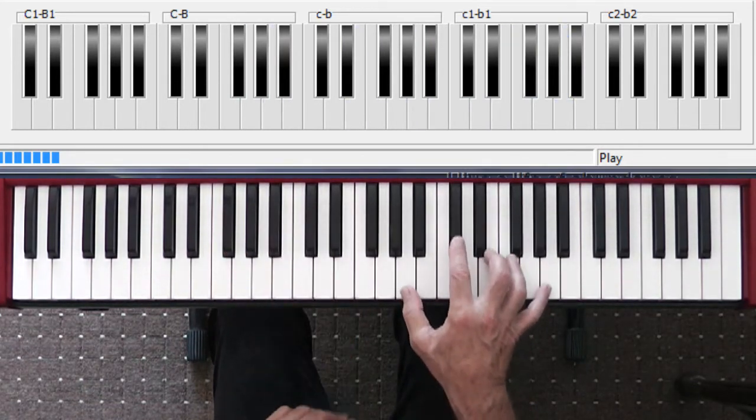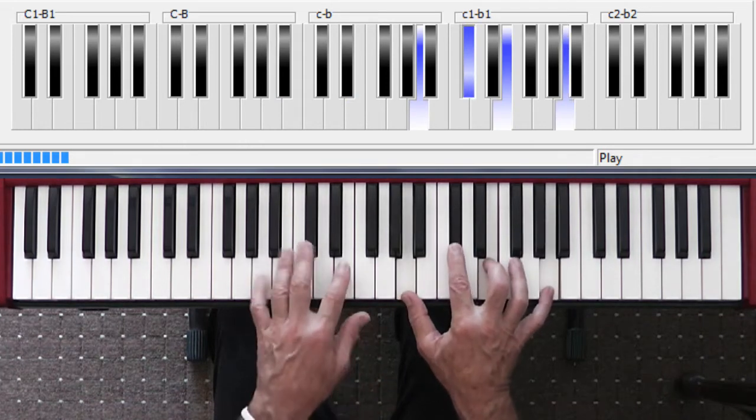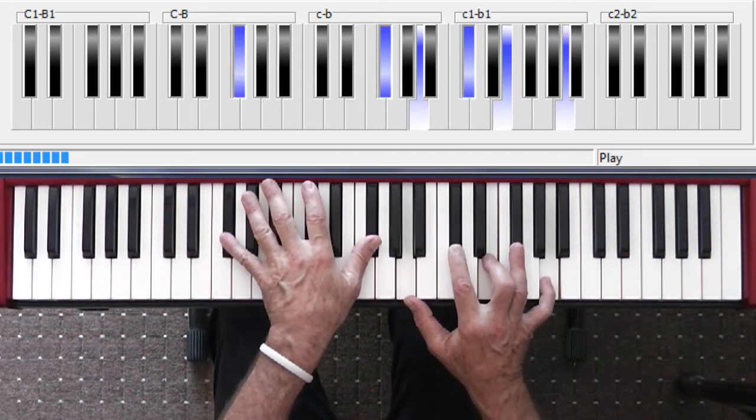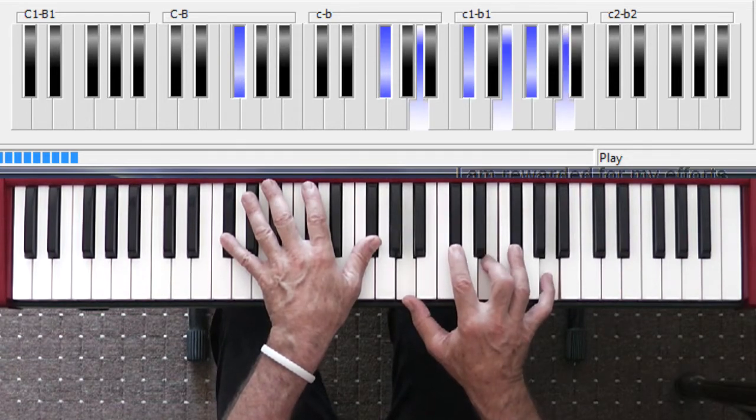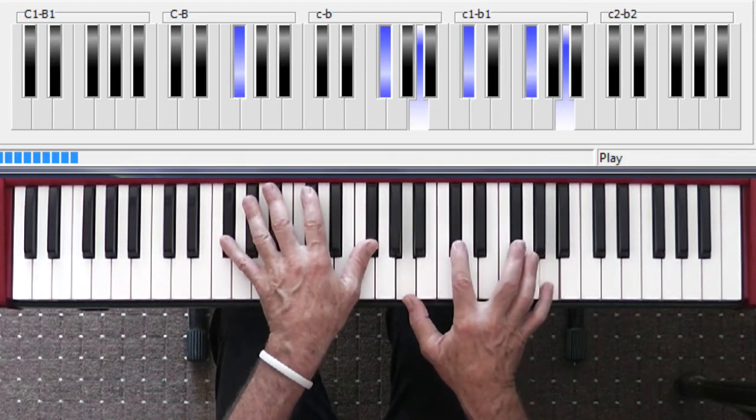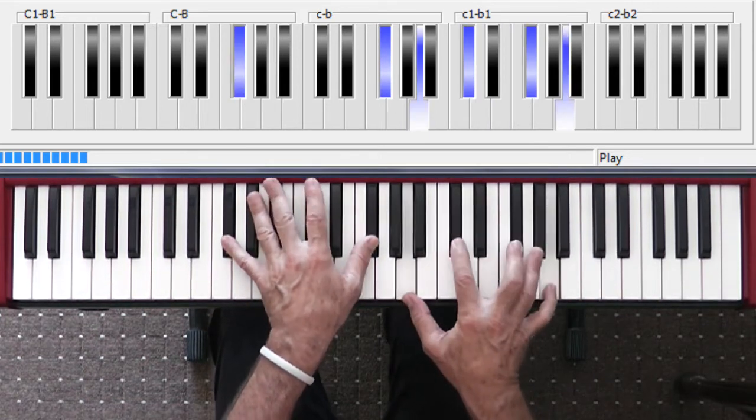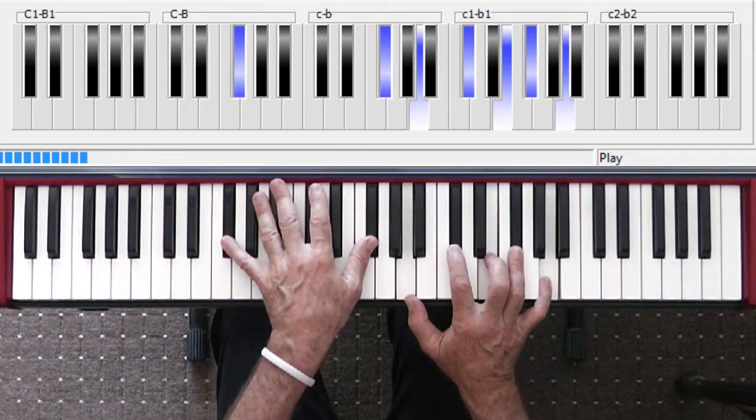So if you're in this root inversion of the A, and you want to get a little more body into this chord, in the F sharp minor, you can put that in, as well as the seventh if you want.